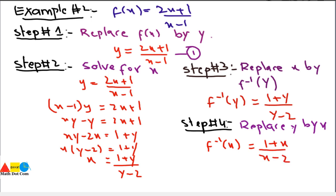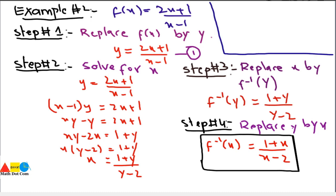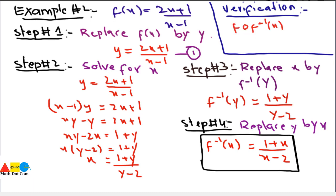To verify whether this answer is right, use the same method of verification: find the composition of the two functions. You need to find f(f⁻¹(x)) and check that it equals f⁻¹(f(x)). That's all from today's lecture on how you can find the inverse of a function.